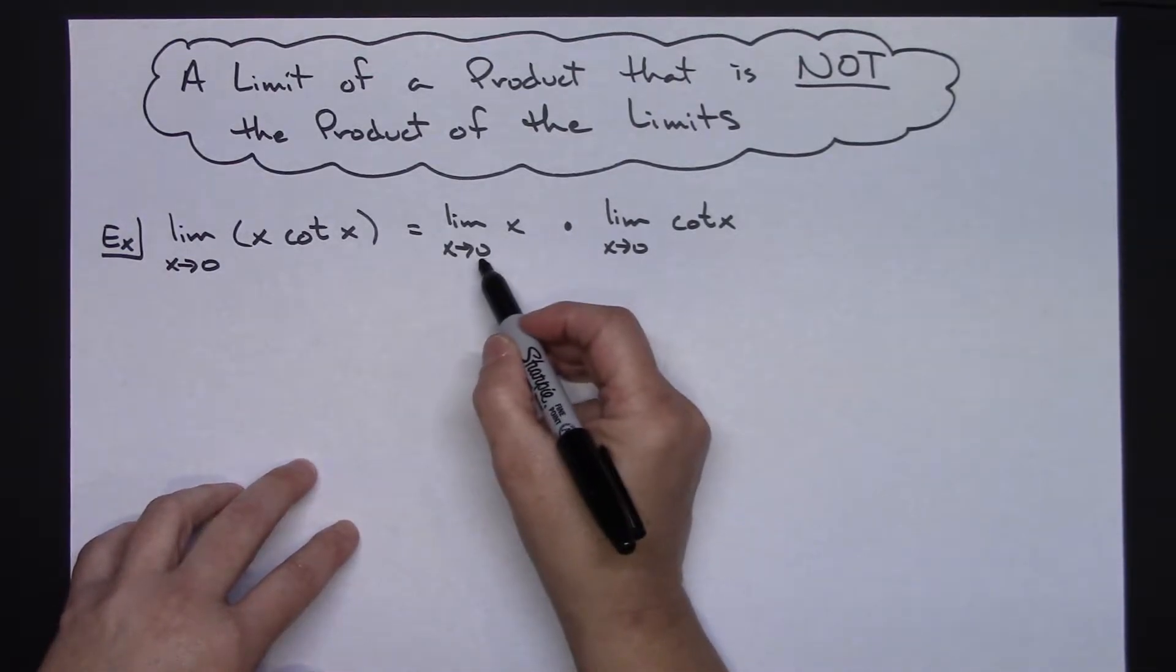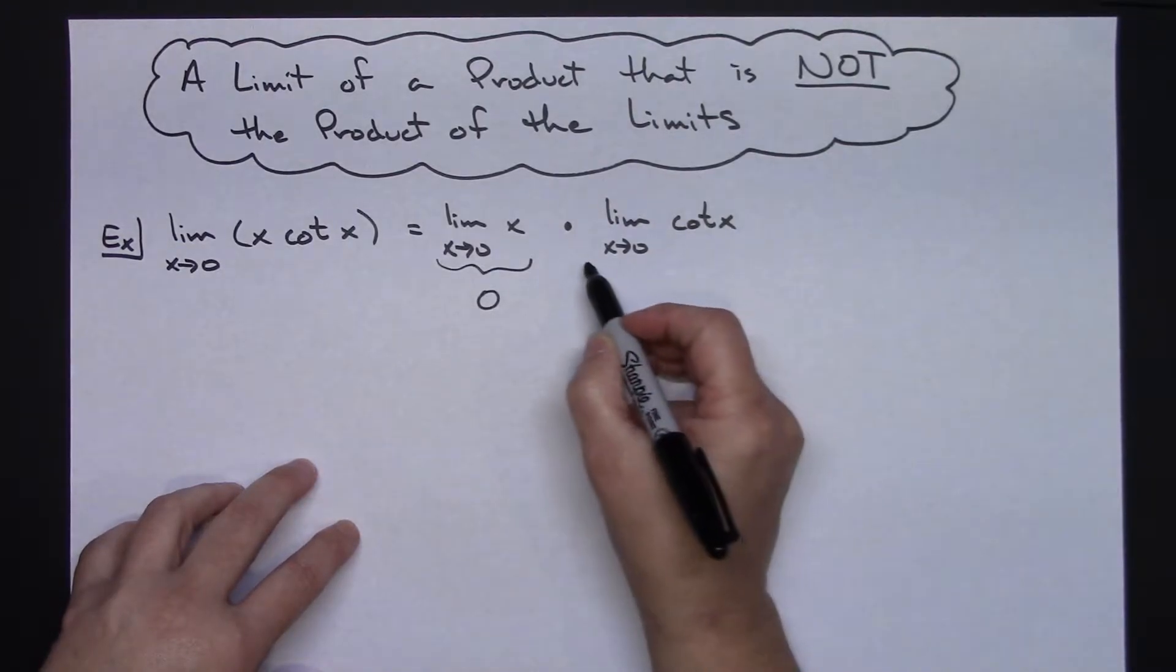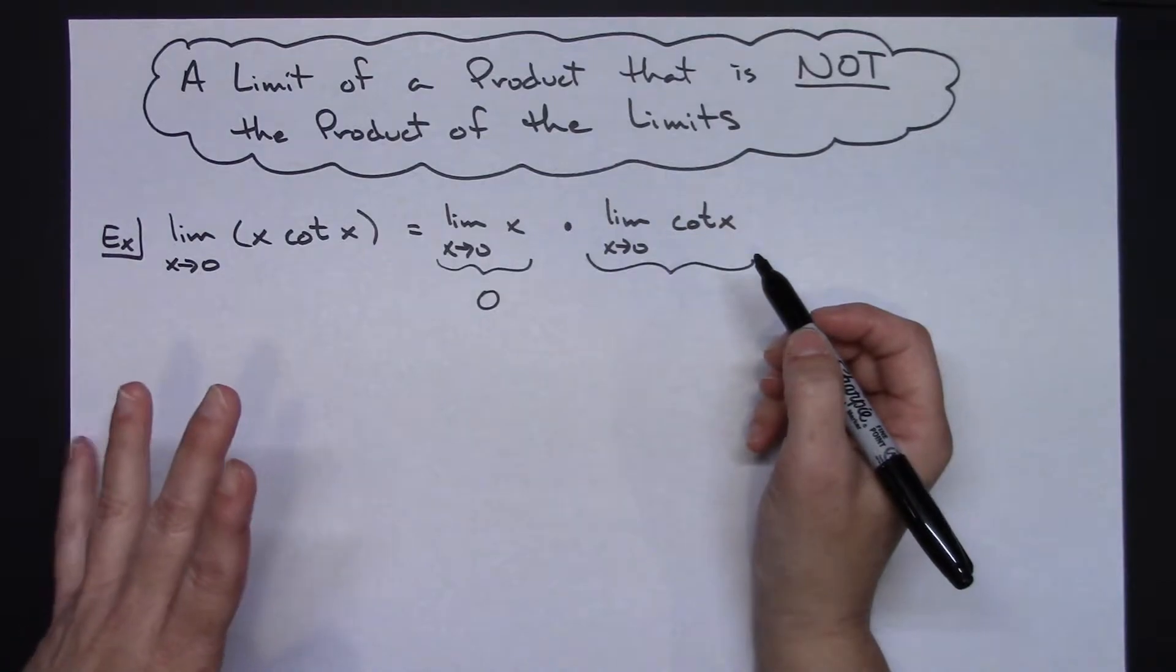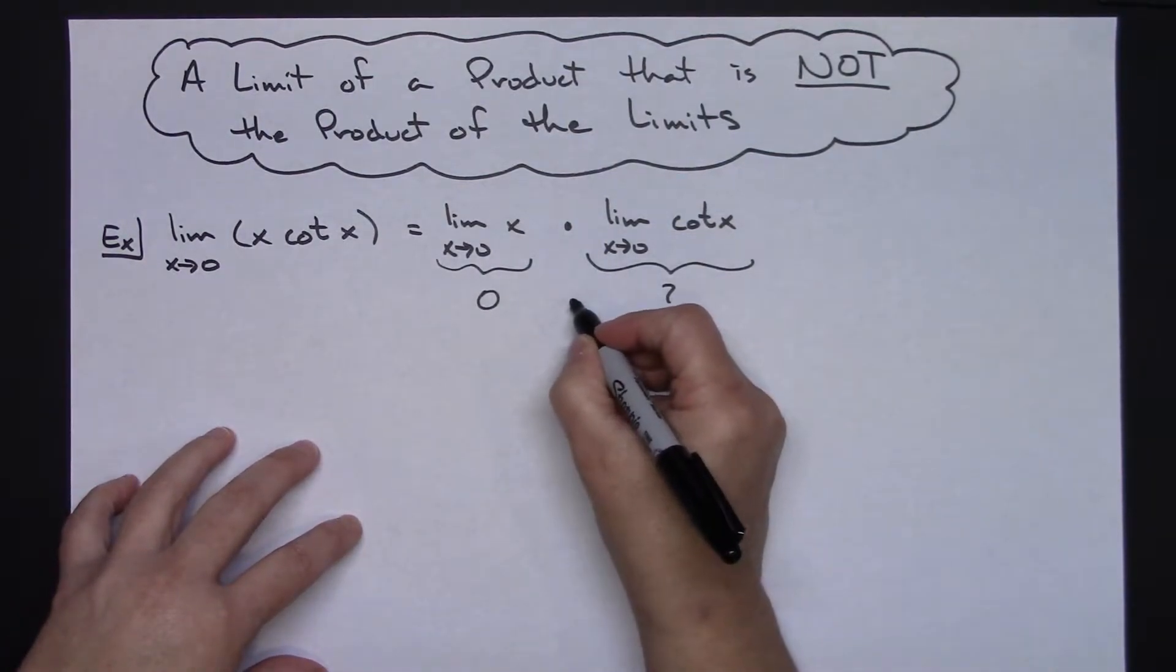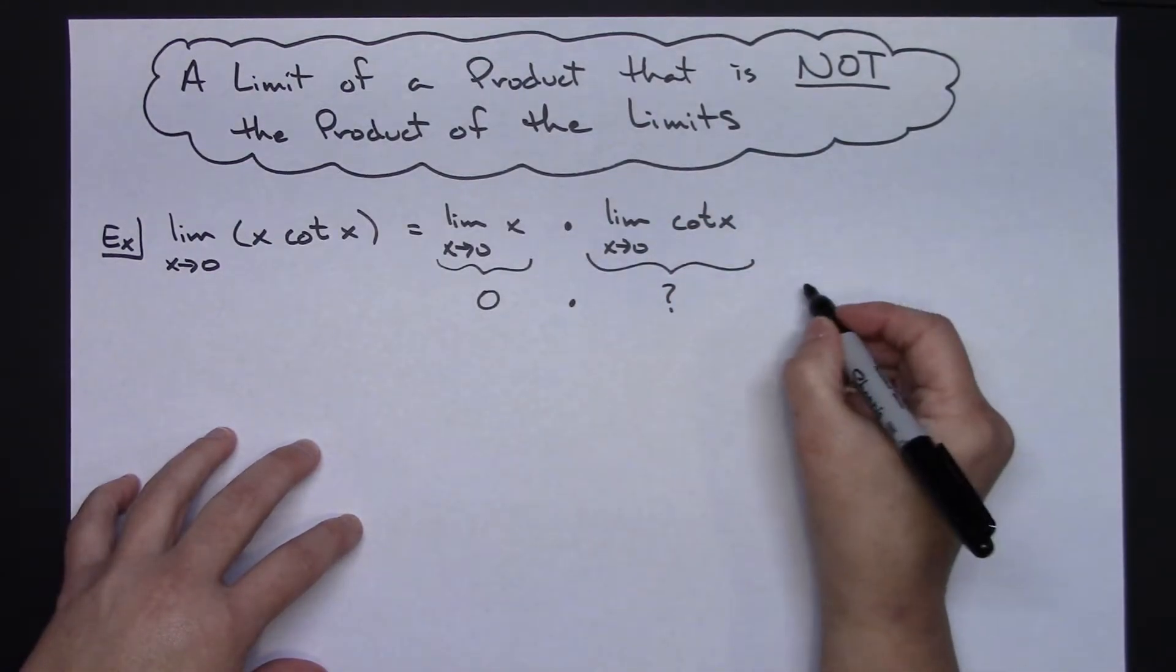And on this right here you're going to do a direct substitution. You're going to see that this one is 0. Then you might come over here and look at this and go, oh well I'm not exactly sure when I do a direct substitution. You might not know what that limit is, but then you're going to think, well it doesn't matter what this limit is because 0 times anything is going to be 0.